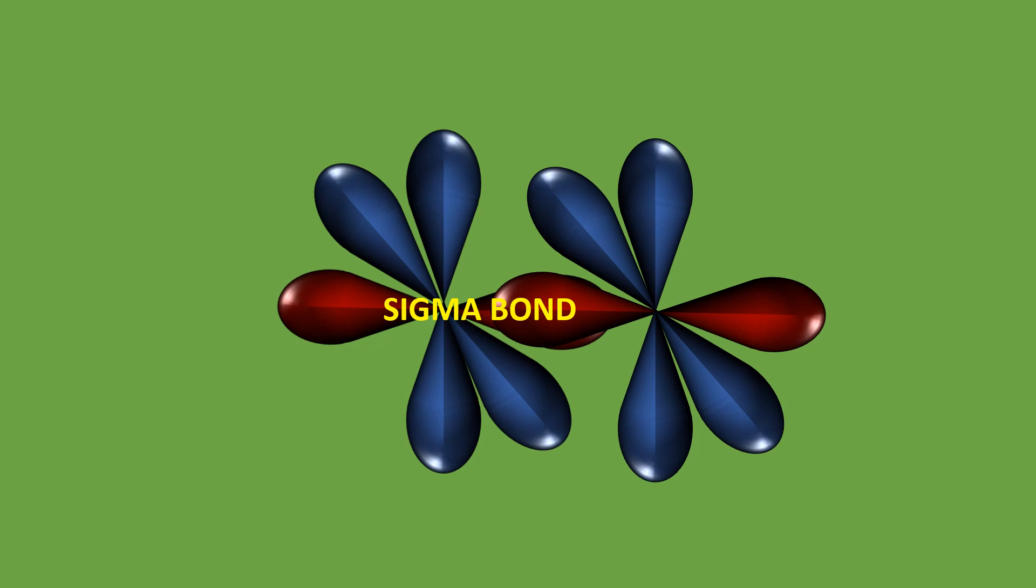The Py orbitals of one nitrogen atom overlap the Py orbital of another nitrogen atom laterally perpendicular to internucleus axis giving pi bond.